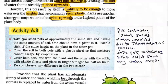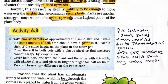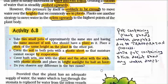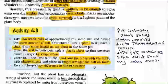Let's look at Activity 6.8. Take two small pots of approximately the same size with the same amount of soil. One should have a plant in it; place a stick of the same height as the plant in the other pot. Cover the soil in both pots with a plastic sheet so that moisture cannot escape by evaporation. Cover both — one with the plant and the other with the stick — with plastic sheets, and place them in bright sunlight for half an hour. Do you observe any difference in these two cases? This is where transpiration plays a role.